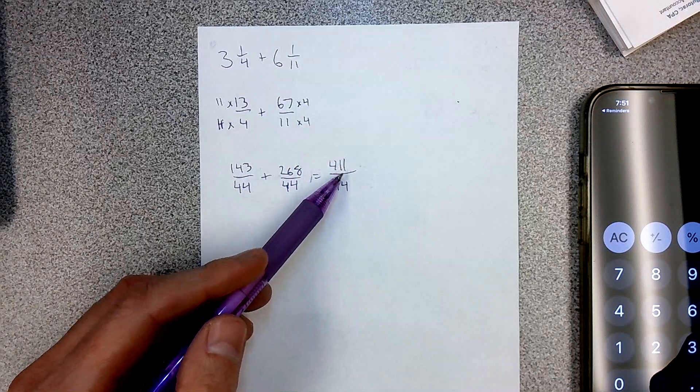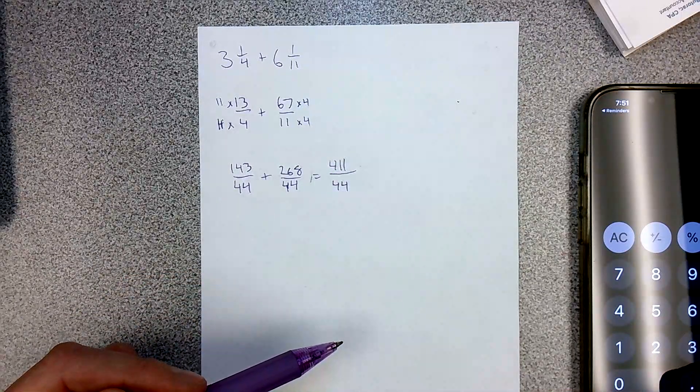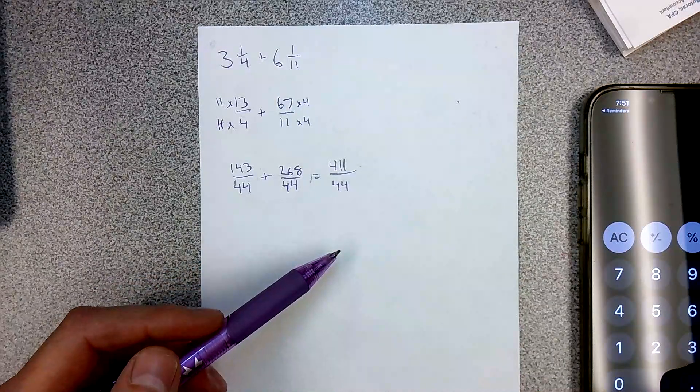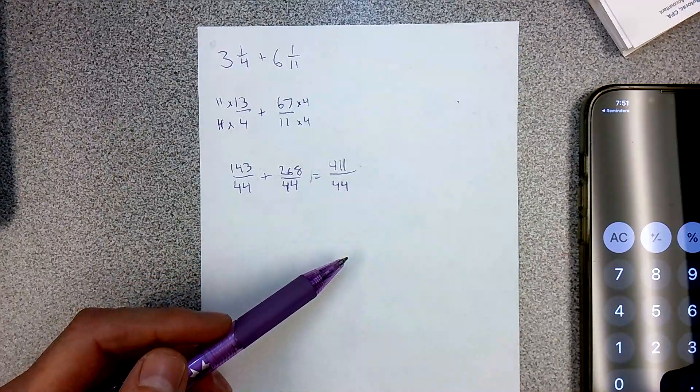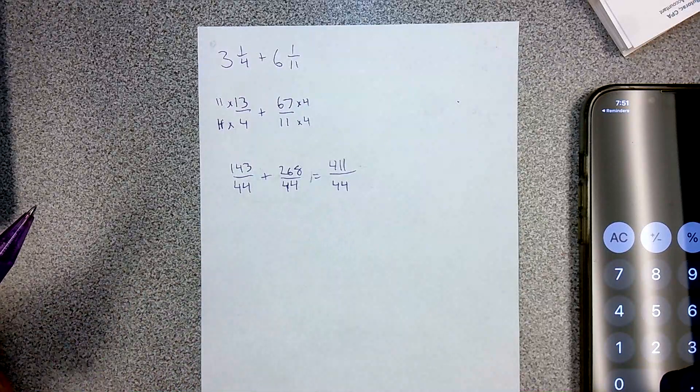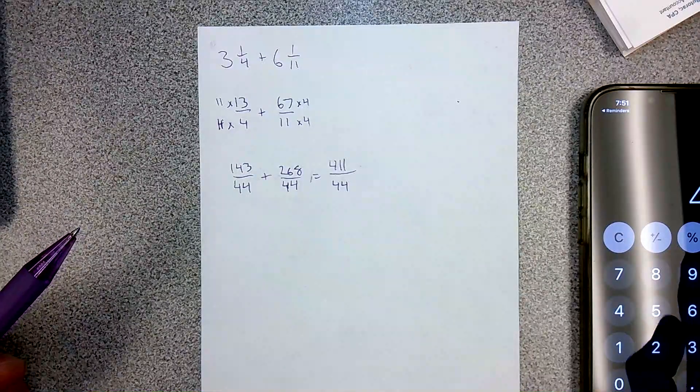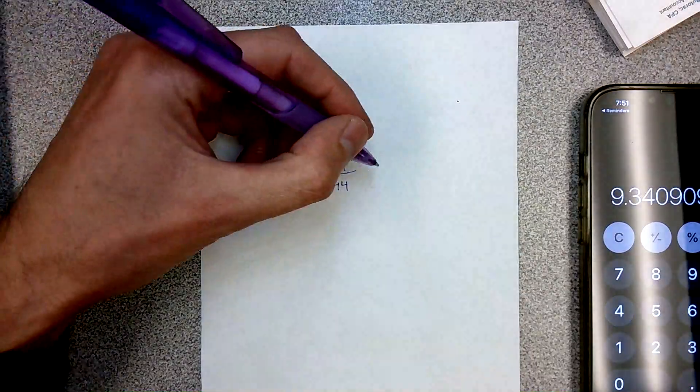They're not both even. So I don't think I can simplify by 2. You can't divide 44 by 3 or 9, 5, 10. I think that's it. I'm pretty sure that is simplified. Again, you could change this to a mixed number.